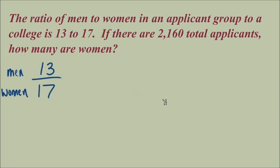Setting up our second ratio, I'm looking to use this quantity 2,160, but this number represents the total applicants, not just the men or just the women. So where does 2,160 belong in our other ratio? Numerator or denominator? Well, we have a bit of a problem with our units.